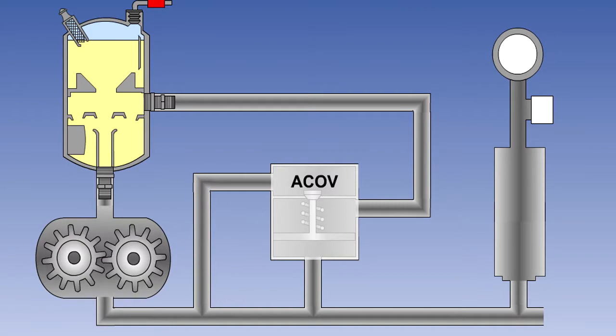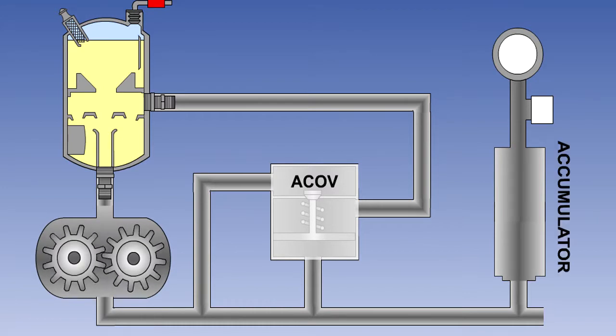The ACOV returns the fluid to the reservoir when the actuators have reached the end of their travel and the system is not operating. Operation of the ACOV will be explained later. In order to prevent the ACOV constantly cutting in and out, this type of system also requires an accumulator. Again, the operation of the accumulator will be explained in a later lesson.